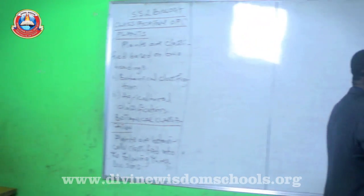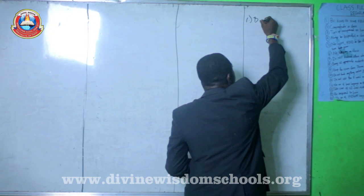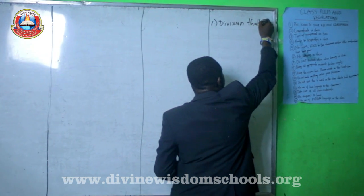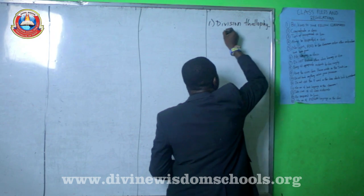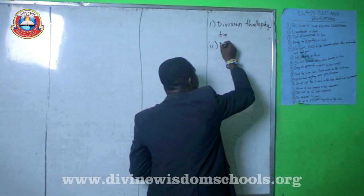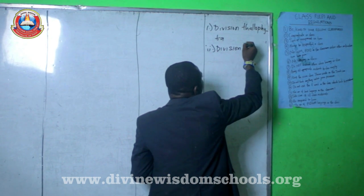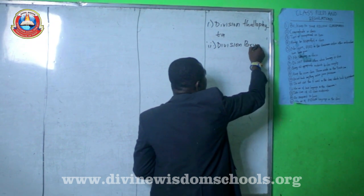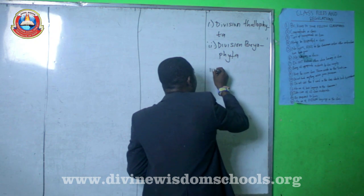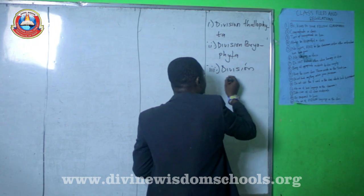In botany, we have three divisions of plants. The first one is division Thallophyta. The second one is division Bryophyta. And the third one is division Tracheophyta.